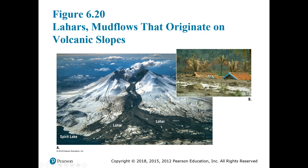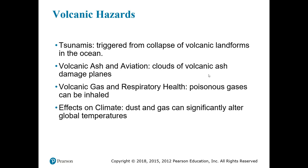Other volcanic hazards include tsunamis — a tsunami is like a wall of water that can happen if a volcanic landform in the ocean collapses, displacing water and generating a wave that travels at high speeds toward the coastline. Volcanic ash is also very dangerous for aviation because it can damage engines and planes. Volcanic gas can cause respiratory health problems because some of the gases released by a volcano are poisonous.